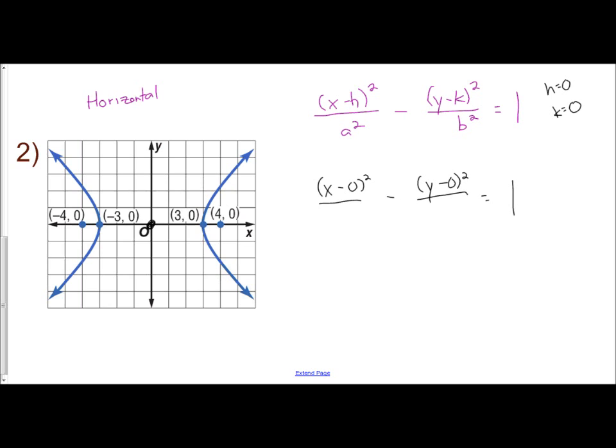So let's find a. a is the distance from your center to the vertex. So here, a is 3. So I have 3 squared, which is 9. So I notice from the graph that a is 3. So 3 squared is 9.